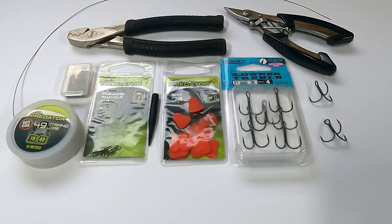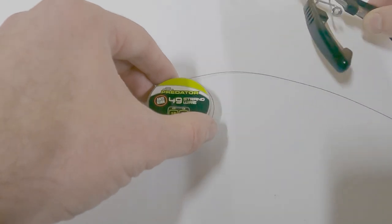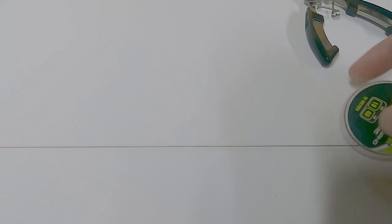Right, let's get one made. Right, first of all, we need to cut around 18 inches of trace wire from the spool, so that we end up with a nice long trace, which helps protect against all the big old teeth from the big pike that we're hopefully going to catch.